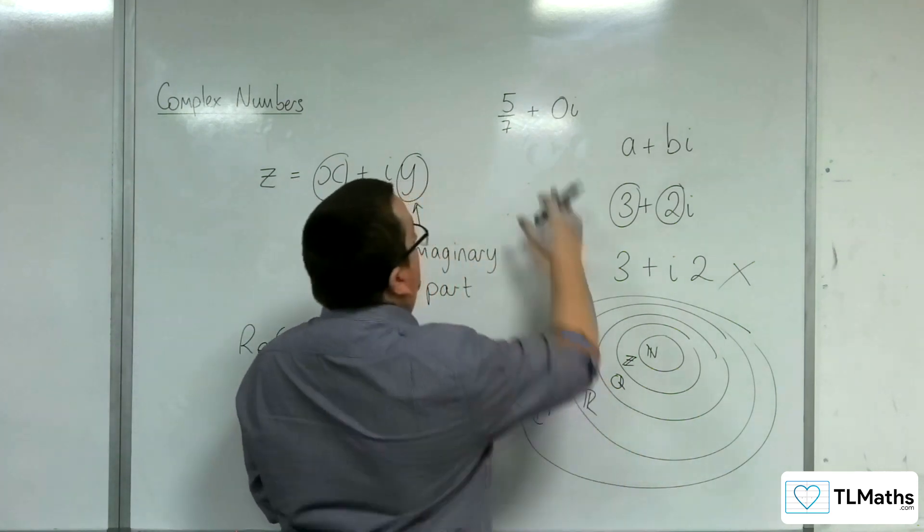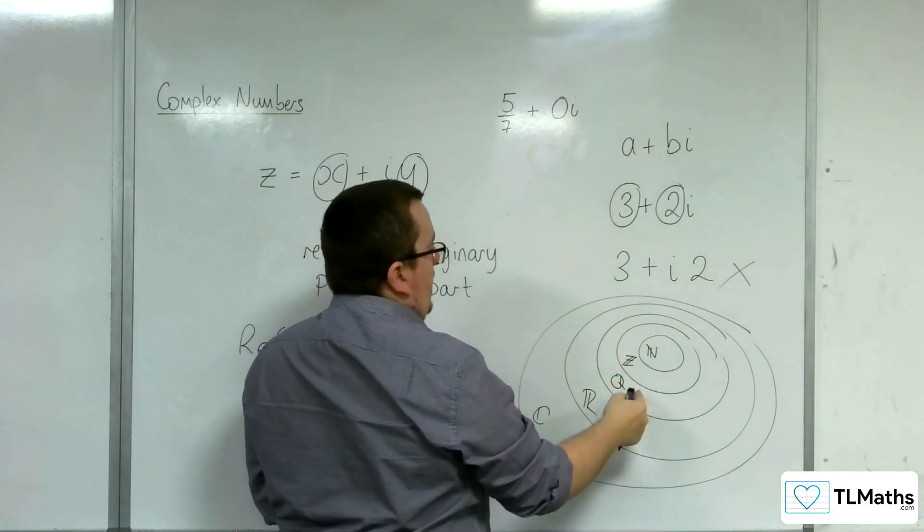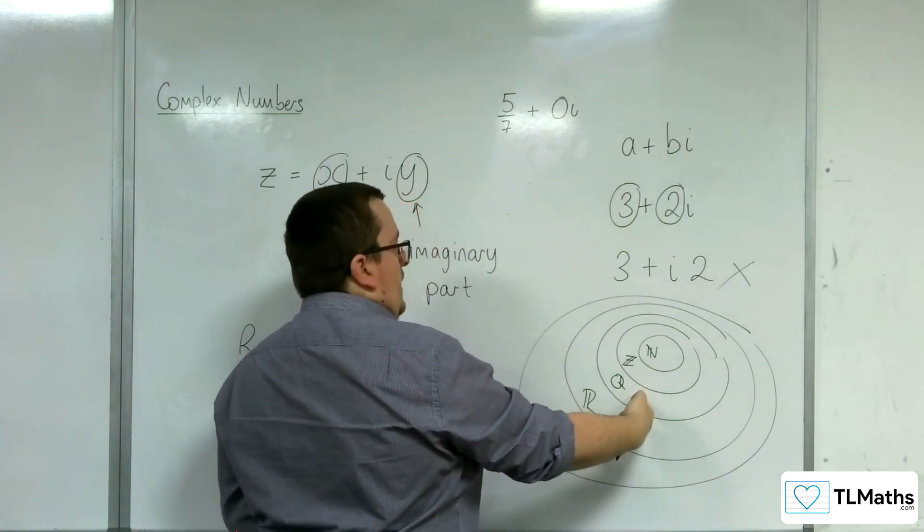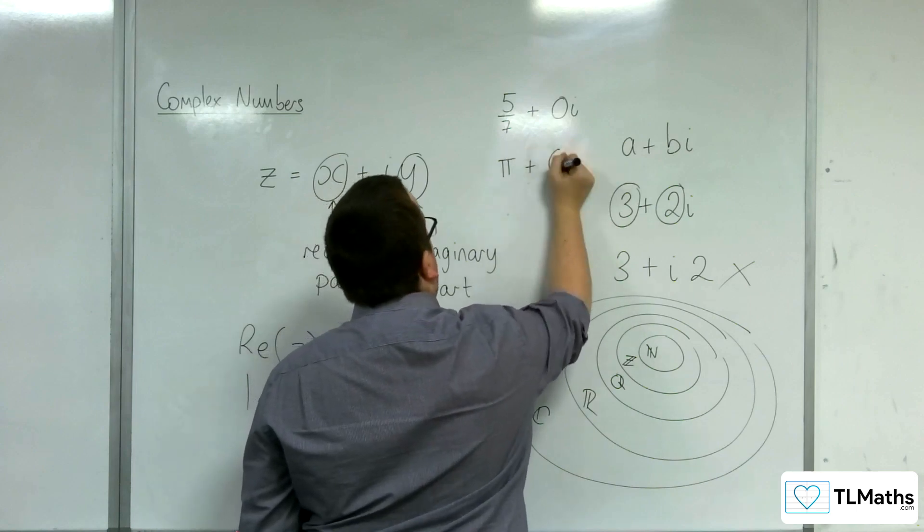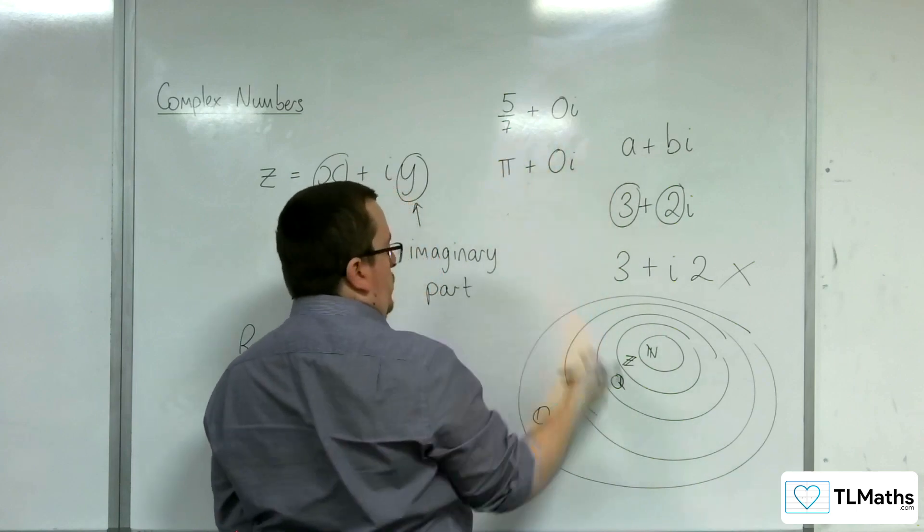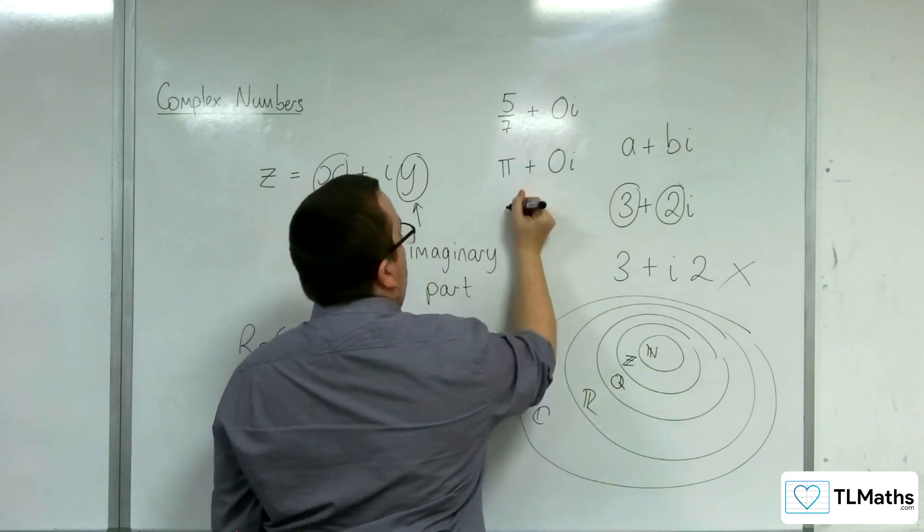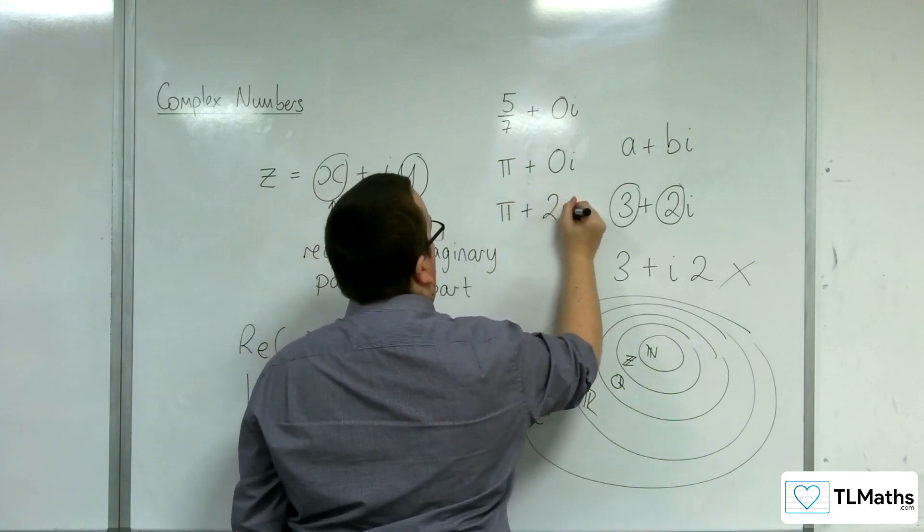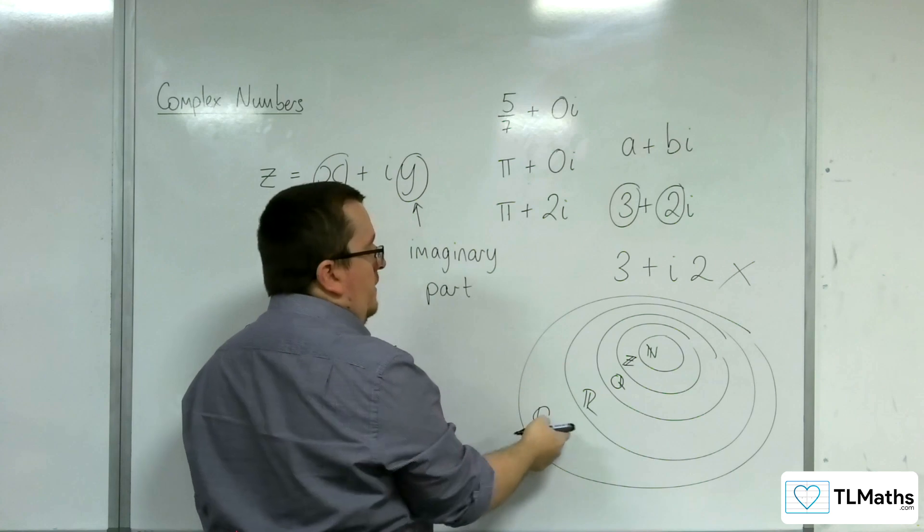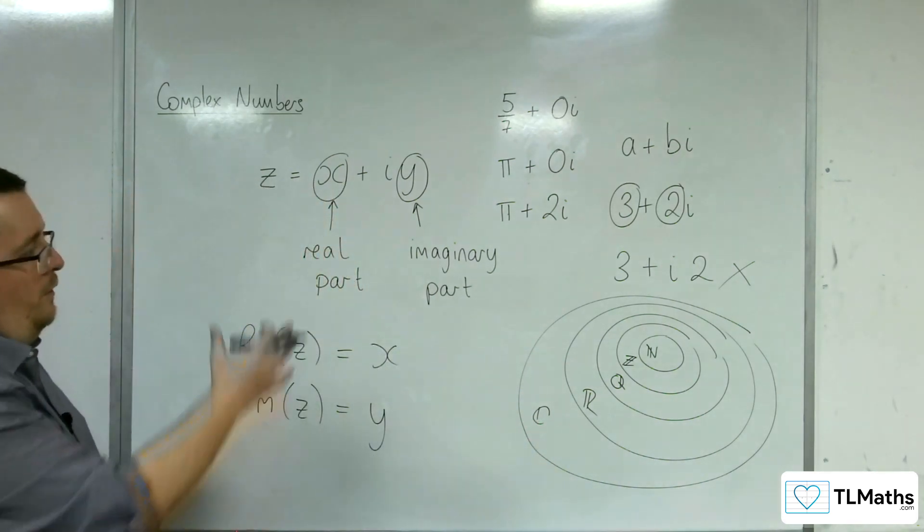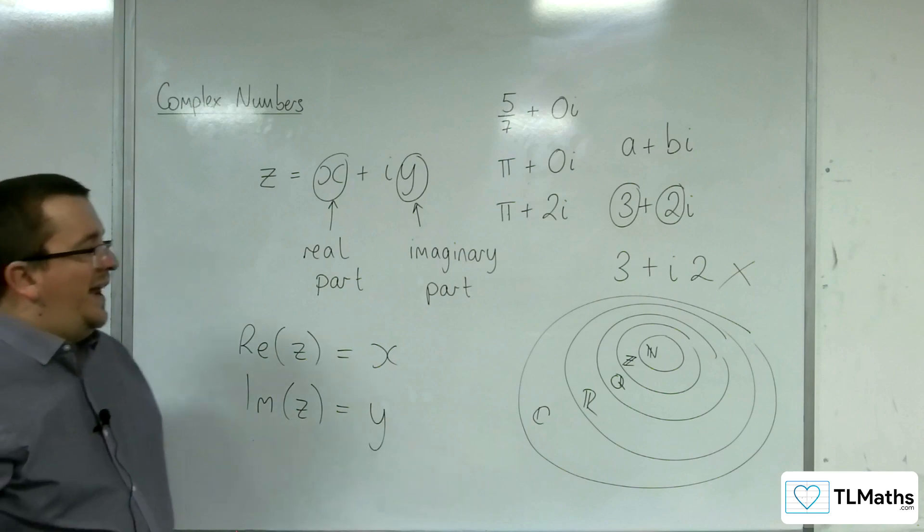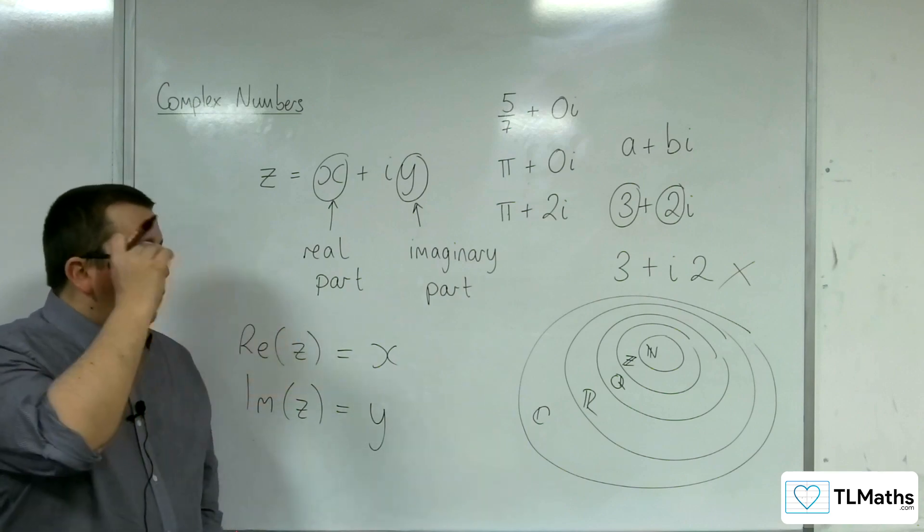So that can be contained in here, okay, in the rationals. Another one might be pi plus 0i. So that you could also contain within the real numbers. But the moment that you've got pi plus 2i, then you're in the complex numbers. Okay. So that kind of hopefully makes it a little bit clearer as to how this is all connected.